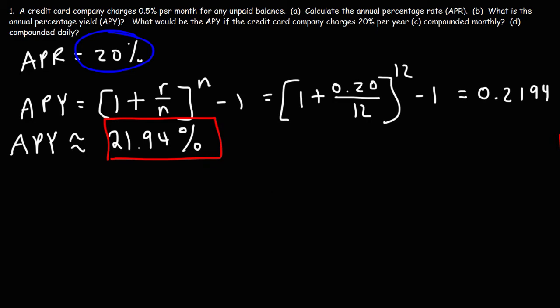Now, let's see what happens if interest is compounded daily. So, we're going to use the same formula. R is going to be 0.20. But if it's compounded daily, what is the value of N? Well, how many days are in a year? We know that there's 365 days per year. So, that's going to be our N value.